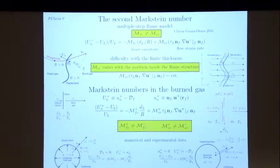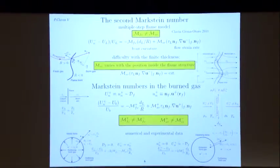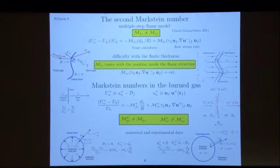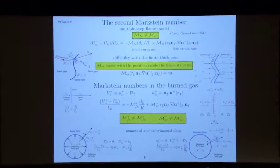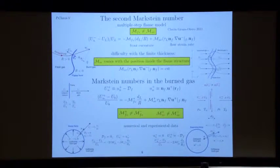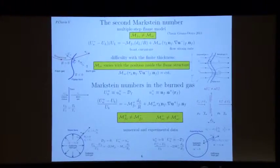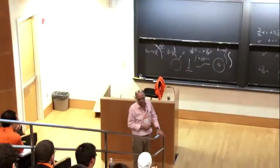This is the second Markstein number. For those who are interested in experiments, they should pay attention to this difference, and they should really understand first, before doing an experiment, these subtleties here. Not all the experimentalists have understood this kind of thing. So this is advice I give to you: if you do an experiment and want to measure the Markstein number, try to understand what is written here or in the paper, because it is important.